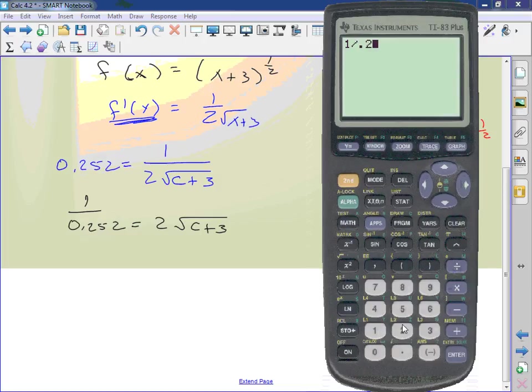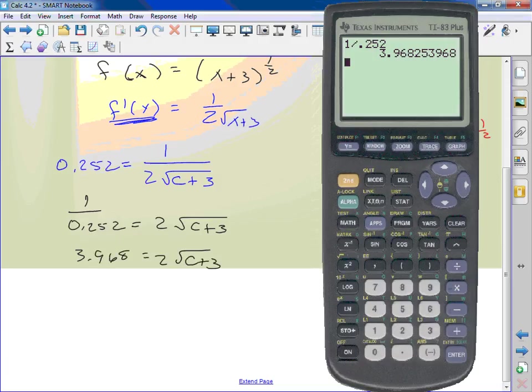So I have 1 divided by 0.252, that's what it is. I can say 3.968. Next step, I have 3.968 divided by 2, 1.984 is what the square root of c + 3 is. How do I get rid of a square root? I square them. And I get 3.936.